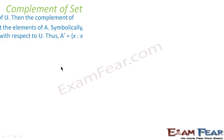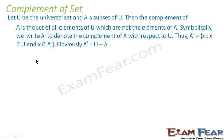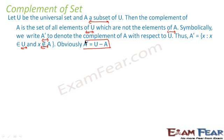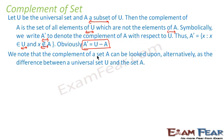Now we will discuss the complement of a set. If U is the universal set and A is a subset of U, then the complement of set A is all the elements of U which are not elements of A. A complement equals U minus A — it is the difference of the universal set and the set A.